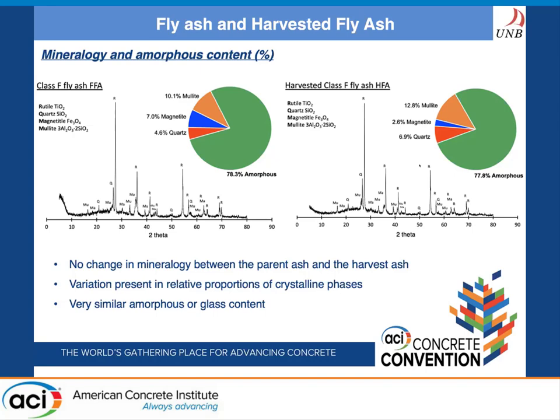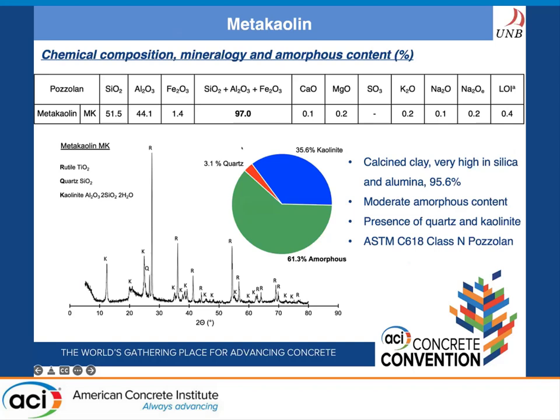We also looked at a highly reactive metakaolin to see how the fly ashes and ground glasses perform compared to it. Metakaolin is a calcined clay containing a high proportion of silica and alumina. QXRD found that metakaolin contains two crystalline phases — quartz and kaolinite. It has slightly lower amorphous content compared to the fly ashes and ground glasses. However, it has high reactivity mainly because of its fine particle size and high specific surface area.